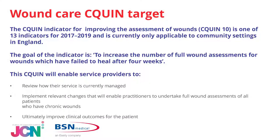The wound care CQUIN target — CQUIN indicator 10 — is one of 13 indicators introduced in 2017 to 2019. It's currently only applicable to community settings in England, particularly community nursing. The goal of the indicator is to increase the number of full wound assessments for patients with wounds that have failed to heal after four weeks. The CQUIN will enable service providers to review how their service is currently being managed, highlight strengths or weaknesses, and implement relevant changes to enable all practitioners to undertake full wound assessments. Ultimately, this will lead to improved clinical outcomes and quality of life for the patient.